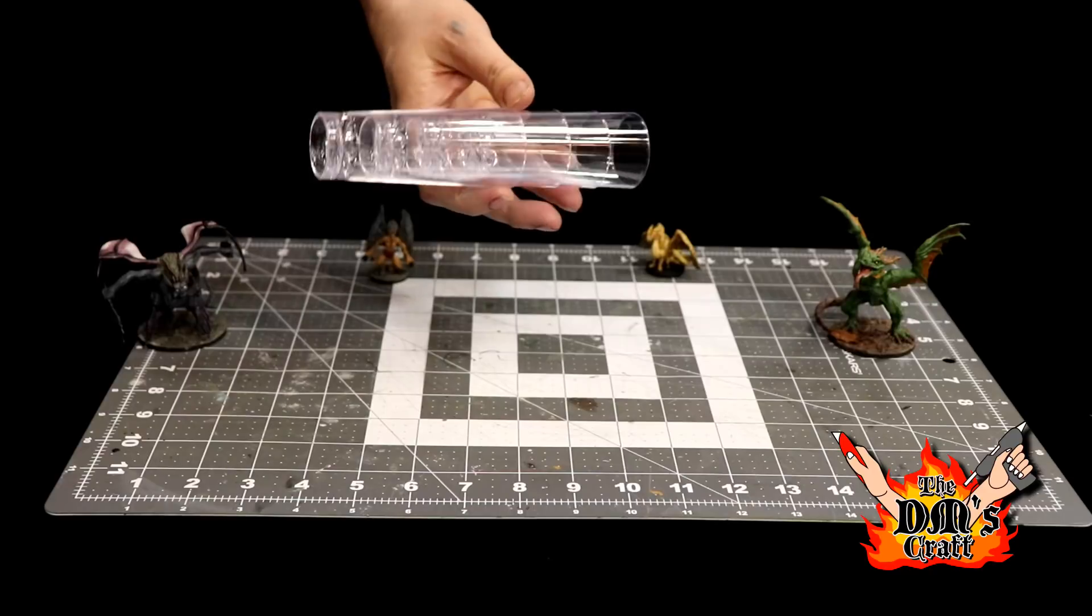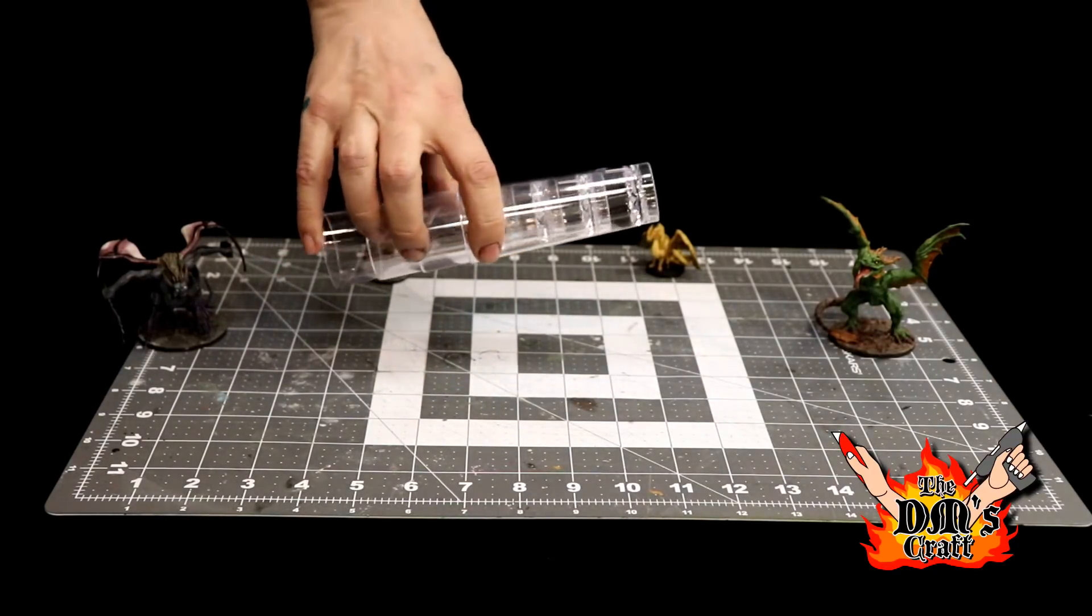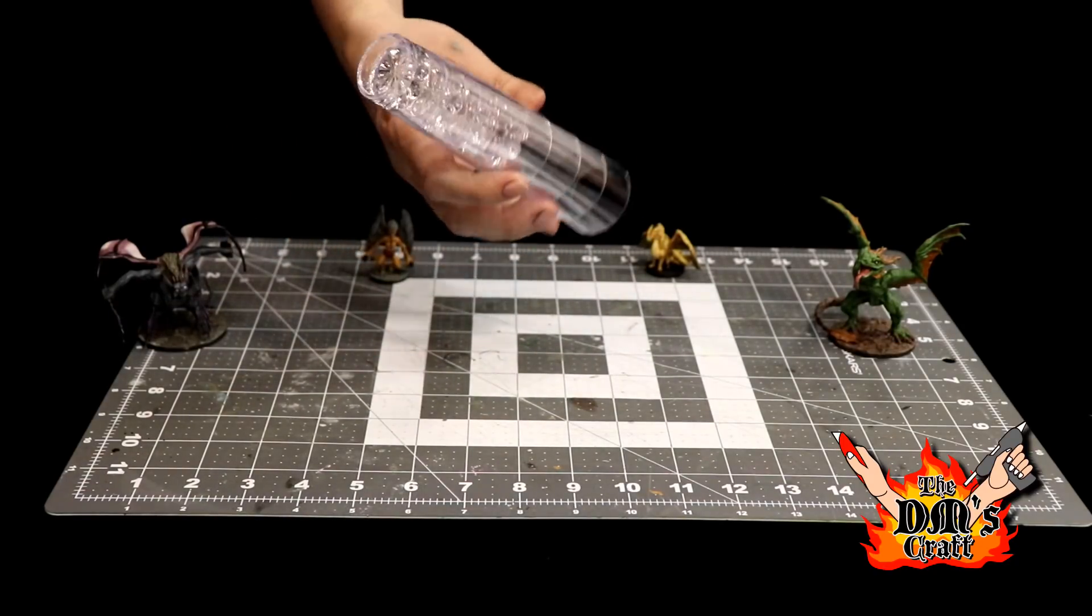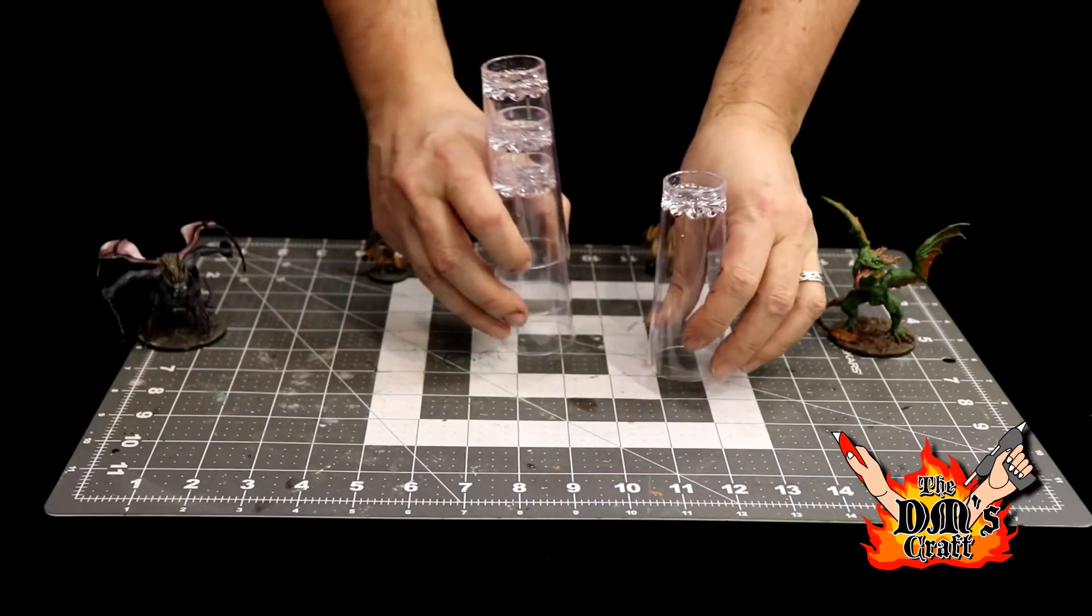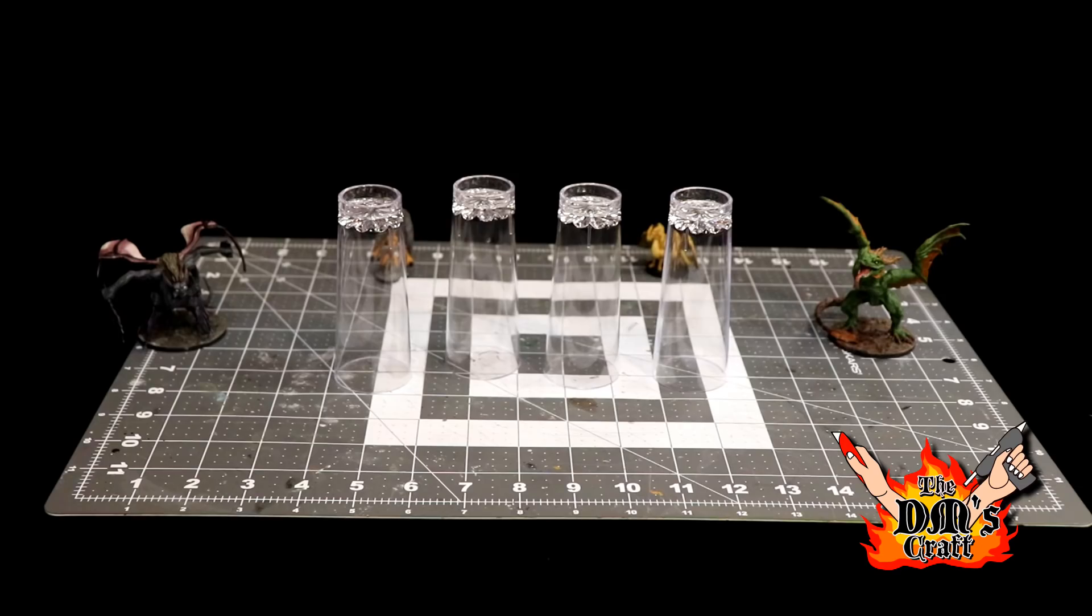These are just great little cheap flight stands you can get. You can get these at the Dollar Tree. If you can't find them there, you can check out my Amazon link. They are more expensive there, but if you can't find them at the dollar store, you can get them there. Really cool, and I hope you guys like this little tip. I'll see you next time with some more DM crafting and DM advice.